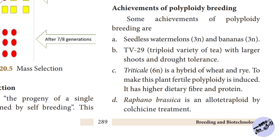Triticale 6CN is a hybrid of wheat and rye. By making the plant fertile through polyploidy, it was induced to produce higher dietary fiber and protein content.